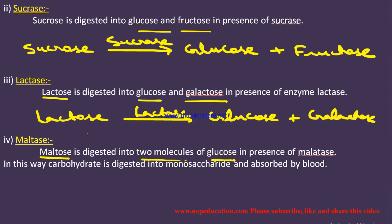The next enzyme is maltase. Maltase digests maltose into two molecules of glucose. We know that two molecules of glucose are combined together to form maltose, so in the presence of maltase, maltose → glucose + glucose.